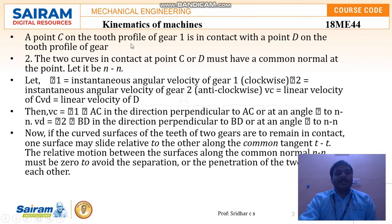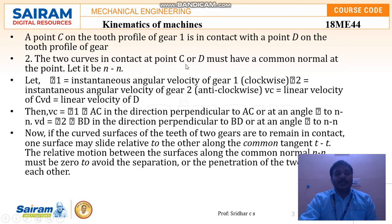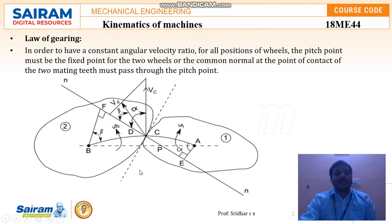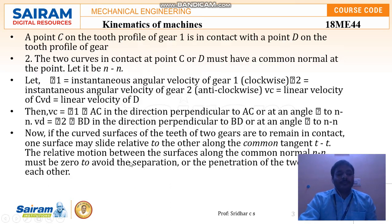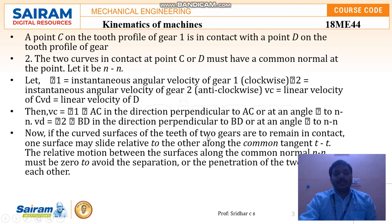The two curves in contact at point C and D must have a common normal point, which we consider as N and M, where both will have a constant meeting point. If the curved surfaces of the teeth of the two gears remain in contact, one surface may slide relative to the other along the common tangent. The relative motion between the surfaces along the common normal must be zero in order to avoid separation of each other and to avoid the two teeth penetrating into each other.